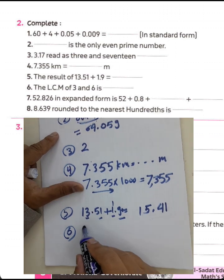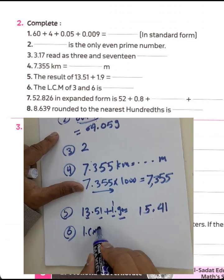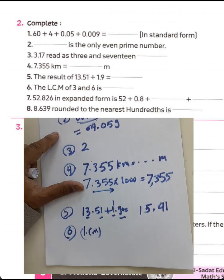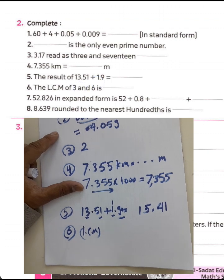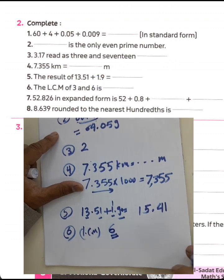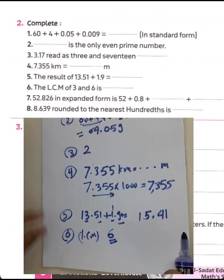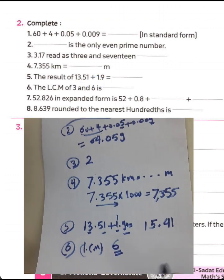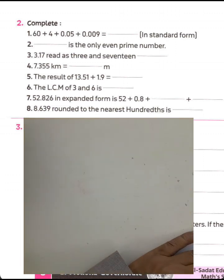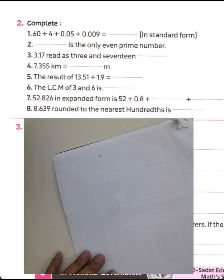Question 6: The least common multiple of two numbers, 3 and 6. We know 6 can be divided by 3, so the least common multiple between them is 6. Question 7: Write this number in expanded form.